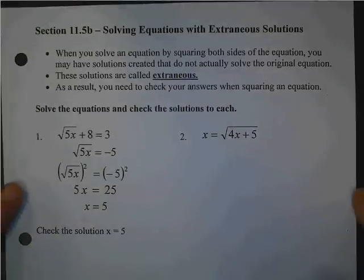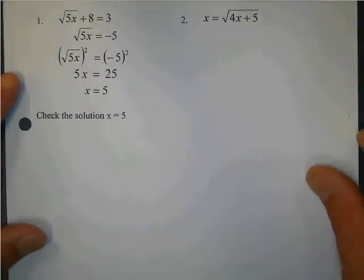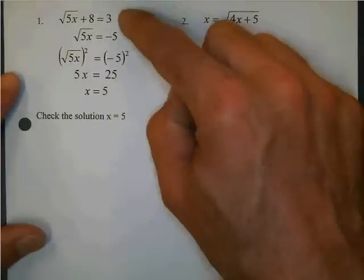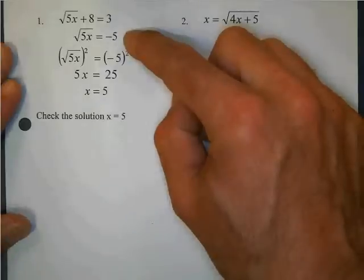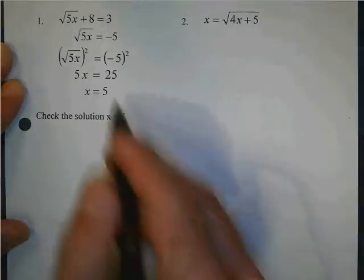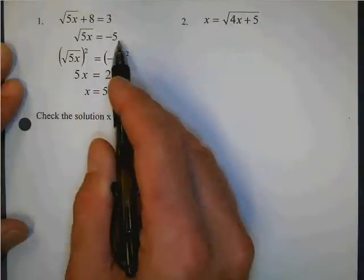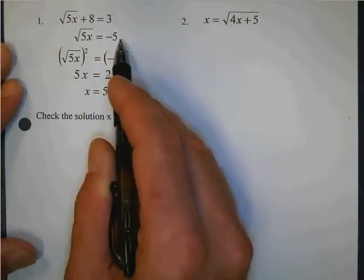Alright, so let's do an error analysis of this problem. What did we do from step 1 to step 2? Talk to me here. What did we do? Jonathan, would you agree we subtracted 8? 3 minus 8 is negative 5. Is that correct? Is 3 minus 8 negative 5?